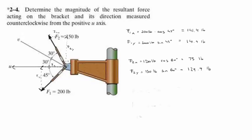F2y is 150. Now remember, in F1, the y component is negative. To find the resultant force, all you have to do is add the x and the y components together.